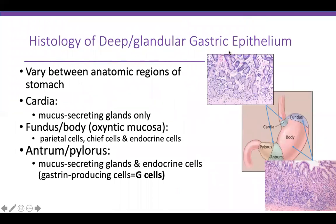The deep glandular gastric epithelium varies between different regions. In the cardia and antrum you have mainly mucous-secreting glands with clear cytoplasm. In the antrum, in addition to mucous-secreting glands, you can also have endocrine cells called G cells or gastrin-producing cells. The fundus and body are mainly lined by oxyntic mucosa, which includes surface epithelium, parietal cells, chief cells, and endocrine cells.